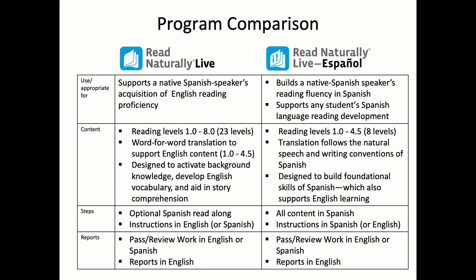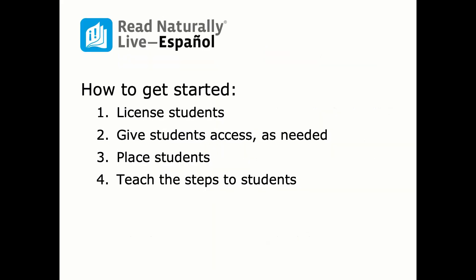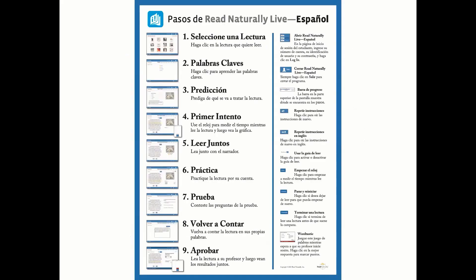This chart compares Read Naturally Live and Read Naturally Live Español. The primary difference is that all content and user interface elements in Read Naturally Live Español are in Spanish. There are also eight levels in Read Naturally Live Español versus 23 levels in Read Naturally Live. To get started, there are four steps: license your students, provide access, place students to determine their starting reading level and goal, and teach the steps to students. I'll cover all four steps in the demonstration. The poster shown is available on our website from the Read Live help page, along with other helpful resources for teachers and students.